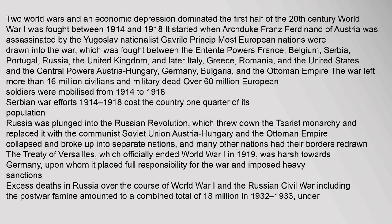Two world wars and an economic depression dominated the first half of the 20th century. World War One was fought between 1914 and 1918. It started when Archduke Franz Ferdinand of Austria was assassinated by the Yugoslav nationalist Gavrilo Princip. Most European nations were drawn into the war, which was fought between the Entente powers — France, Belgium, Serbia, Portugal, Russia, the United Kingdom, and later Italy, Greece, Romania, and the United States — and the Central Powers: Austria-Hungary, Germany, Bulgaria, and the Ottoman Empire.